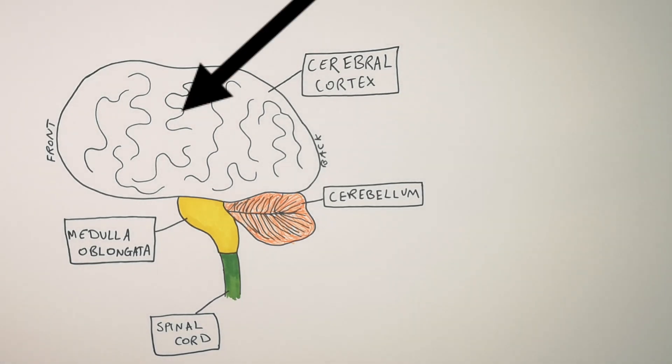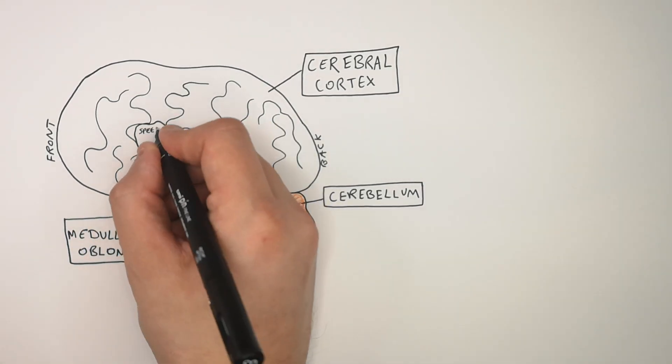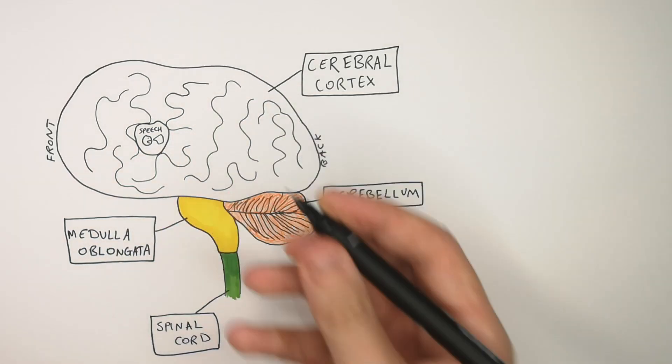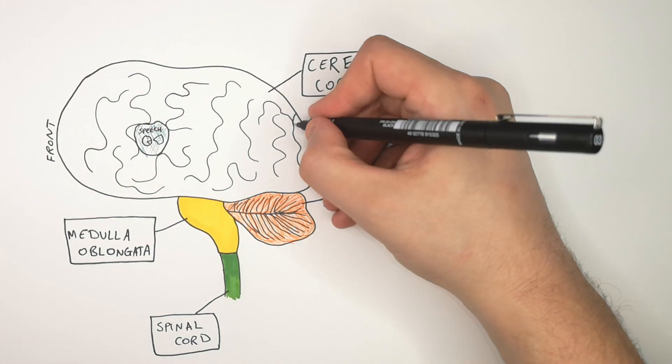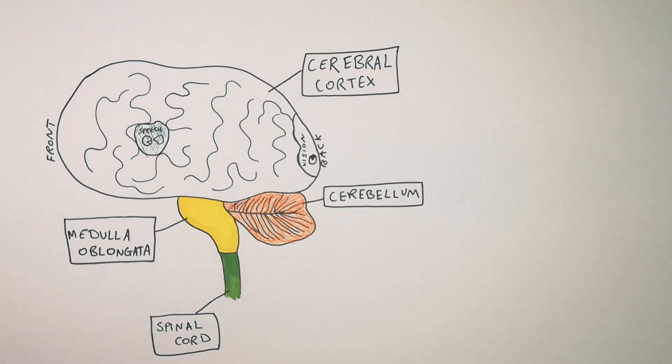So what does the cerebral cortex do? Well, the cerebral cortex has many different regions which control different aspects of our bodily functions. So this part of the cerebral cortex has been shown to control our speech, and if that part of our cerebral cortex was to get damaged we would probably lose our speech. At the back of our brain is where our vision is controlled and processed.